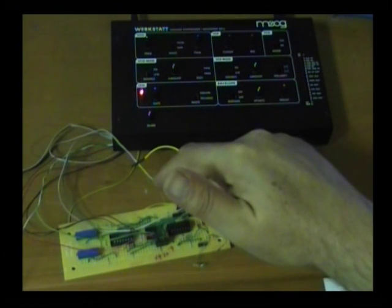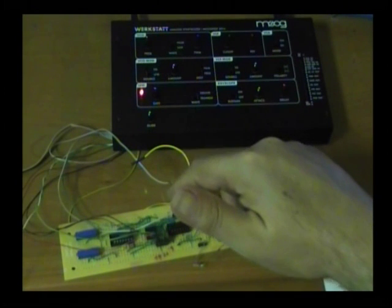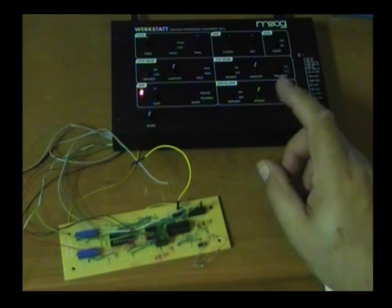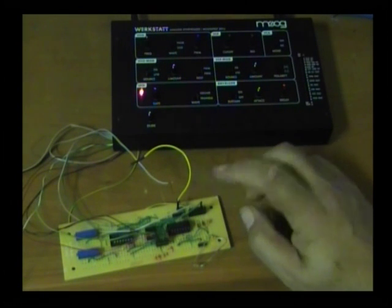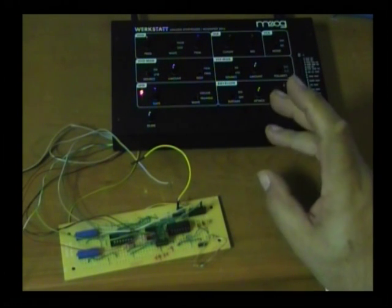By using this signal, which is the counter reset, and taking that to ground, I can disable the counter reset. So with the delay circuit and the counter reset disabled, I now have an arpeggiator.